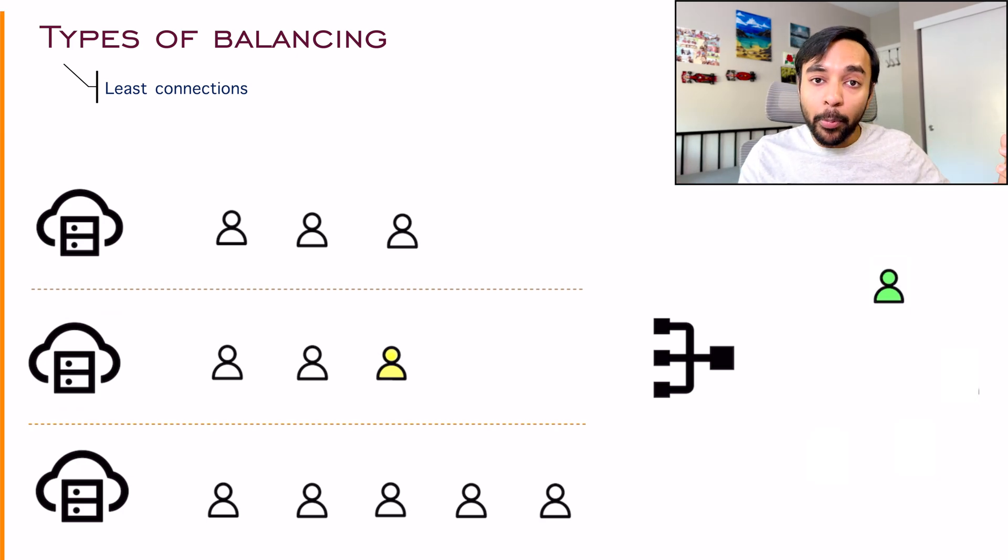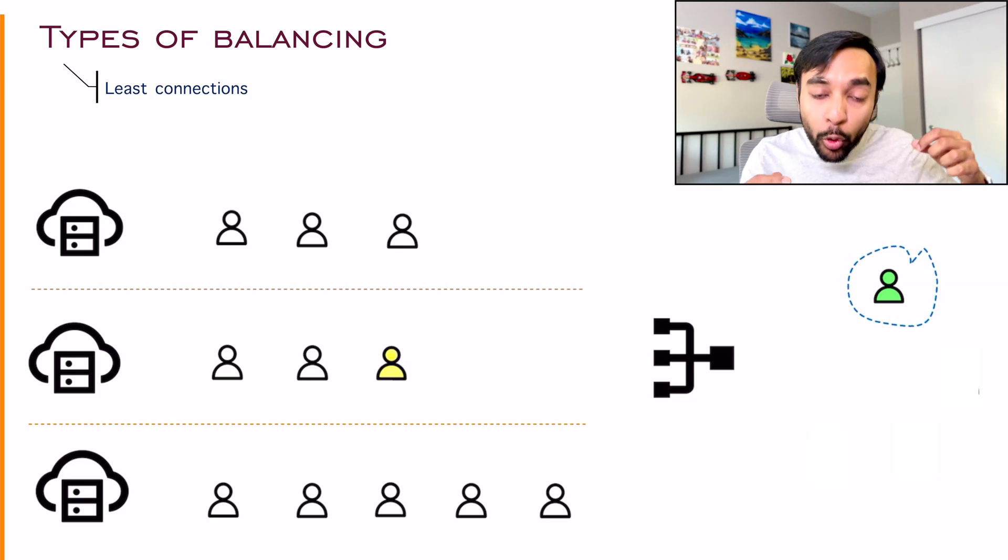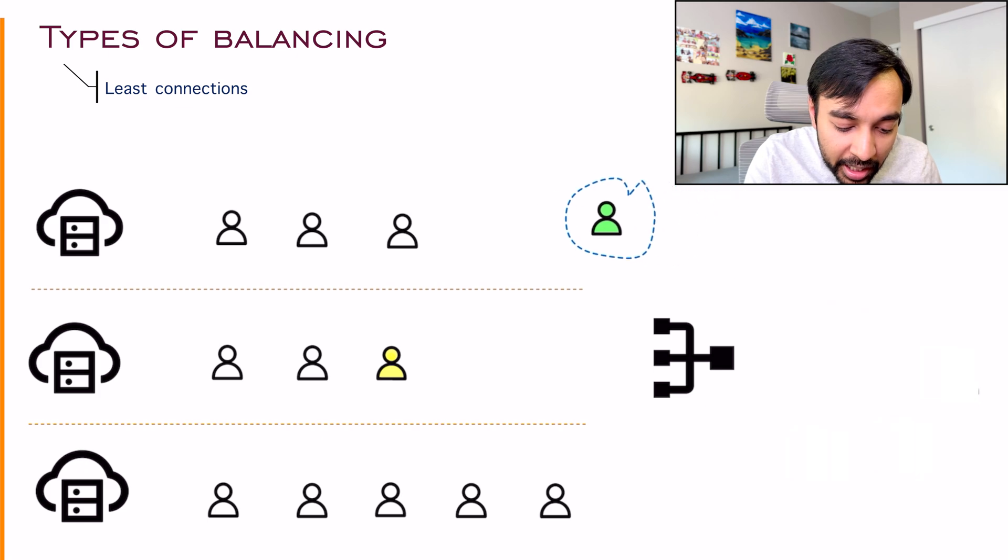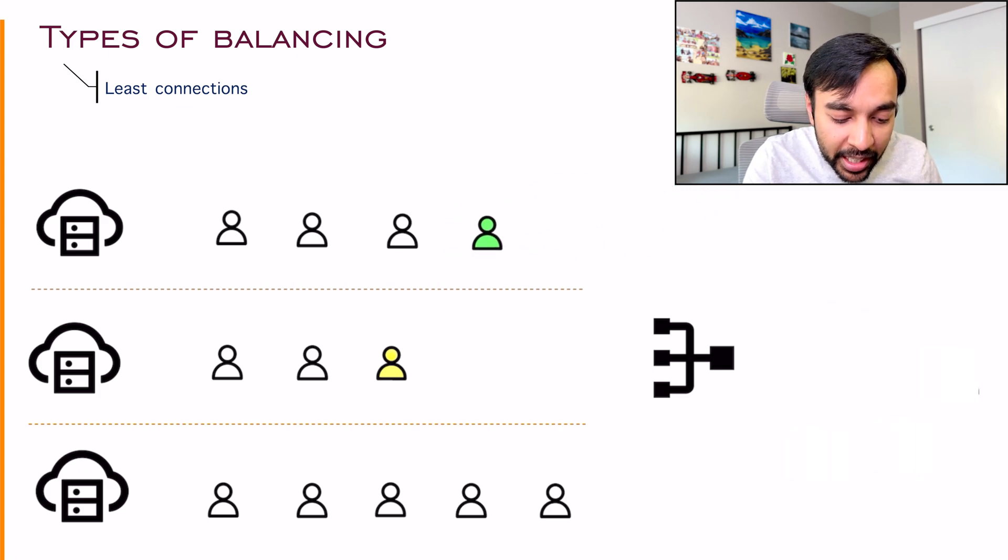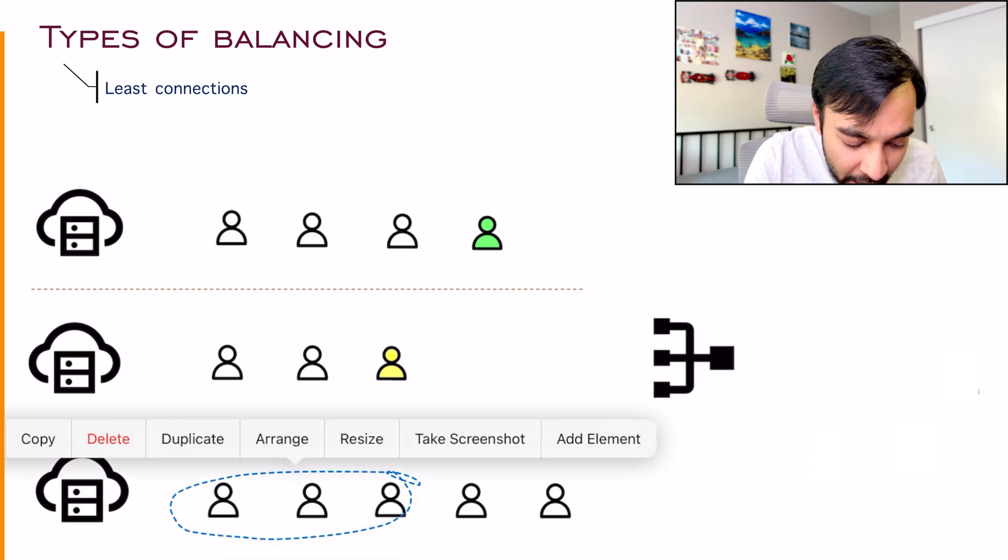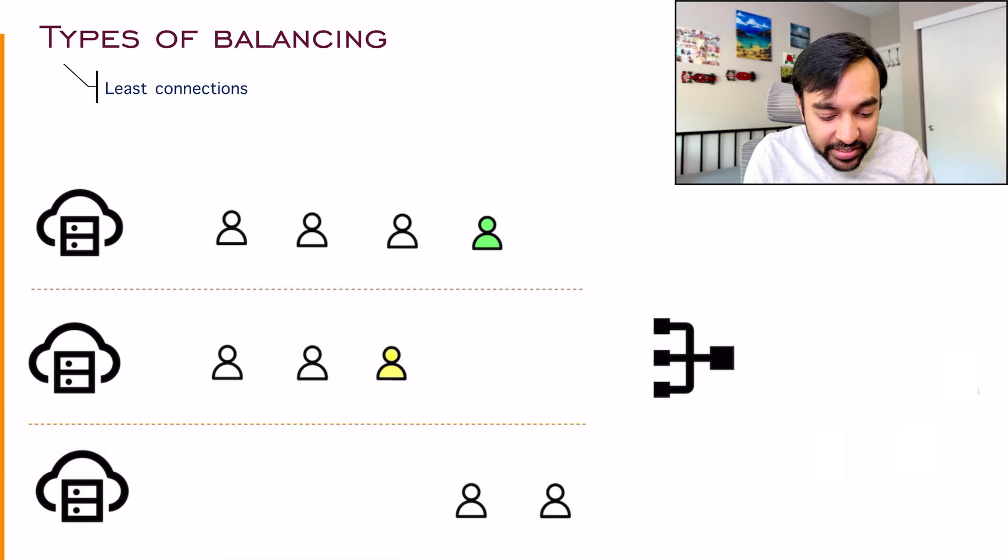And now it could be possible that another client comes in. Now this client can go to any of the server which has the least number of requests. So randomly it is possible that, okay, this client went to the first server. Now, as this time happens, it could be possible that server number one was able to finish all of these three clients. So they no longer exist. These clients have been served.